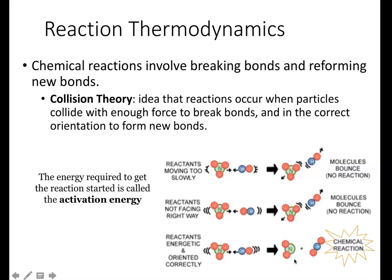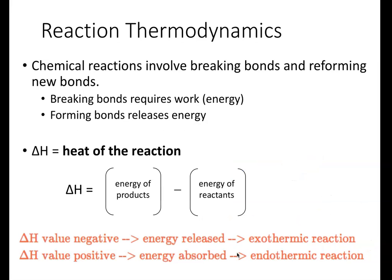We call this the activation energy. These orientation and speed requirements are known as the activation energy — the push you need to get the reaction going. A classic example: you can't just put a log in a fireplace with oxygen in the air and expect it to burn. It needs a spark, some heat to start the reaction. The match provides the activation energy to get the log going, and then the chemical reaction of the log burning in oxygen will continue and sustain itself. We can calculate the energy change of the chemical reaction — how much energy we spend breaking bonds and how much we gain forming new bonds — and we call this delta H, or the heat of the reaction.